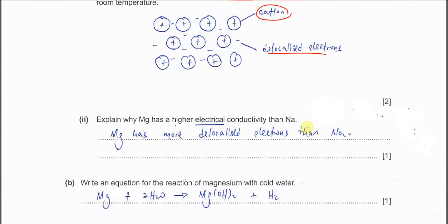Part A(ii), explain why magnesium has higher electrical conductivity than sodium. We know that sodium is Group 1 so it releases one electron, and magnesium is Group 2 so it releases two electrons, which is more than sodium. Magnesium has more delocalized electrons than sodium.